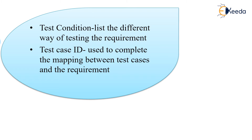The test condition list is a different way of testing the requirement. When building the requirement traceability matrix, it consists of test condition, test case ID, and the phases of testing. The phases include component testing, integration testing, system testing, functional testing, non-functional testing, and so on.